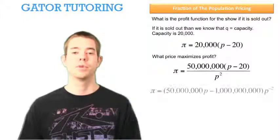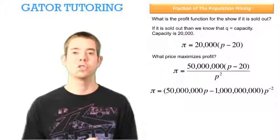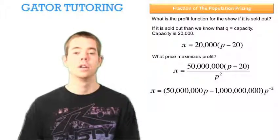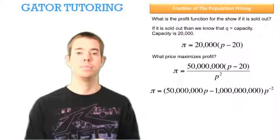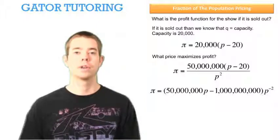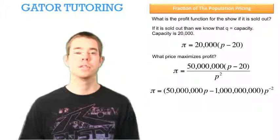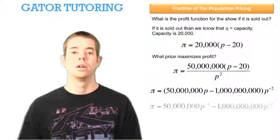So we can rewrite it like this. And at the same time, I've distributed through my 50 million. So I multiply 50 million by P and 50 million by negative 20. And I move my P squared to the numerator. Now I can distribute through my P raised to the negative 2 to get this.